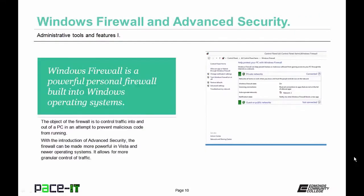Windows Firewall is a powerful personal firewall built into all Windows operating systems from XP and newer. Its purpose is to control traffic into and out of a PC to prevent malicious code from running. From Windows Vista onward, there is Windows Firewall with Advanced Security, which makes the firewall more powerful and allows for more granular control.